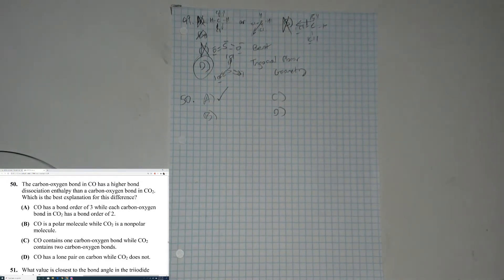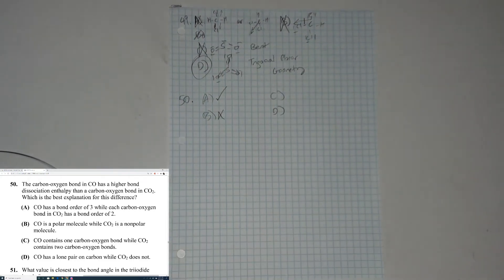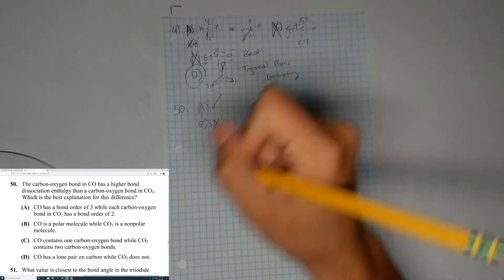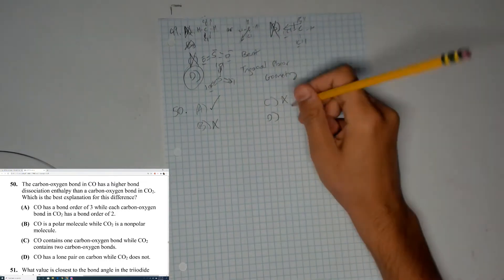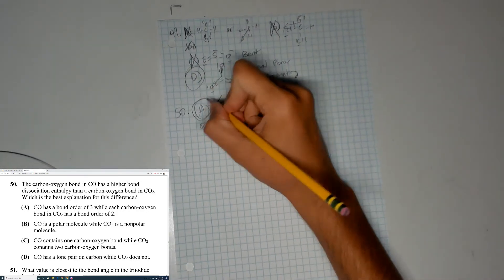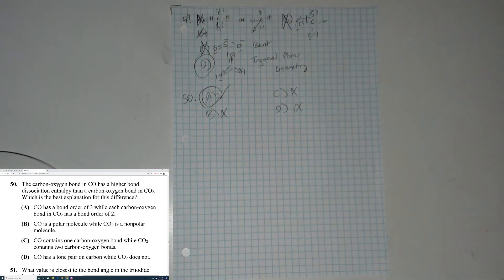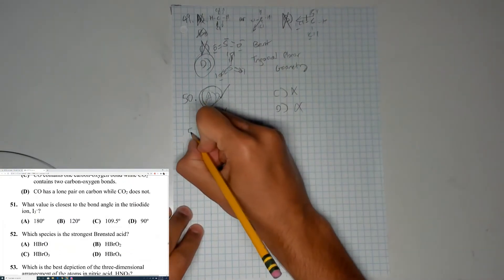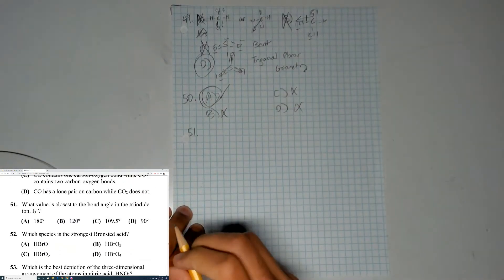B — CO is a polar molecule — barely makes a difference in bond strength, so B is out. C doesn't fit well either. A is the answer; it makes the most sense. Pretty straightforward question.